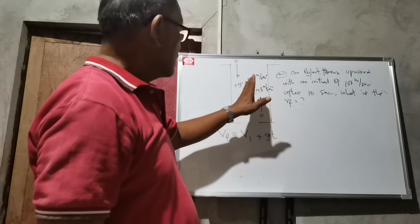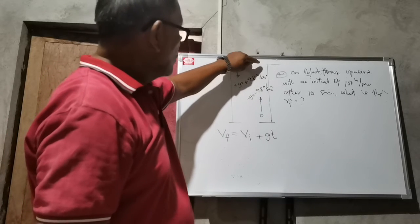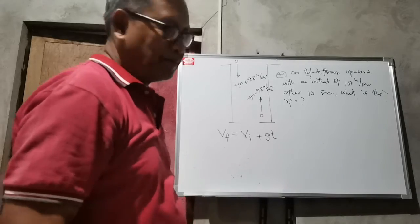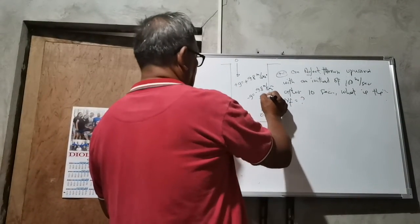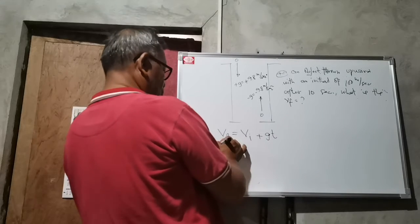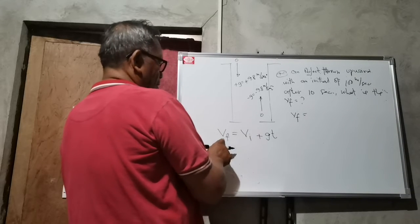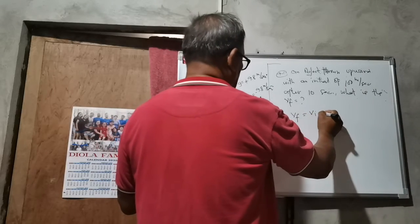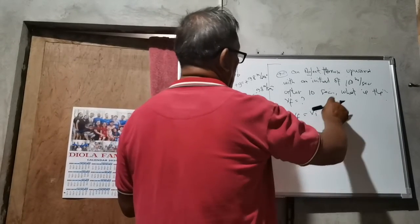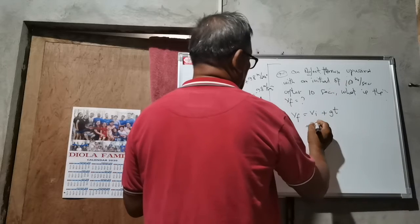As the object goes upward, we can see that the velocity will be lessened until it reaches zero, wherein after zero the object will return going downward again. The formula will be this one: final velocity VF equals VI plus GT. We will no longer transform this formula since VF is already on the left side. Therefore, VF equals VI plus GT.